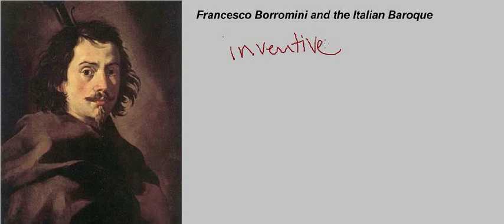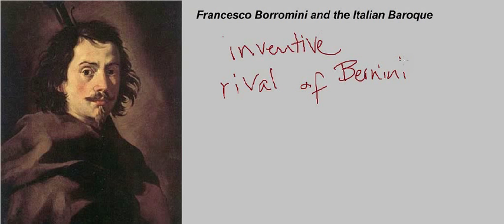He was a contemporary of Gian Lorenzo Bernini, who we've already looked at, and he was actually one of his main rivals. They had a very competitive relationship. It's really interesting to consider Borromini alongside Bernini because both men are very representative of what Italian Baroque architecture really was. But they're very different architects with a very different aesthetic and very different goals driving them.